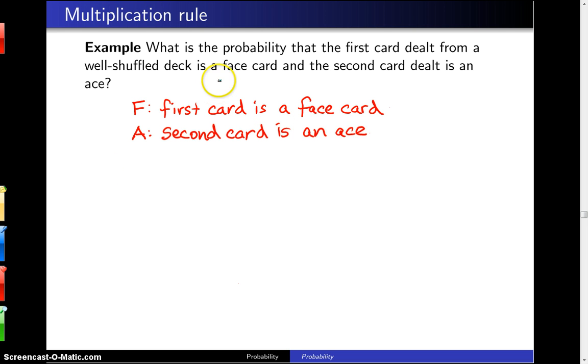So what we're looking for here is the probability of getting a face card on the first and an ace as the second card. So that is, we want the probability of F intersect A.